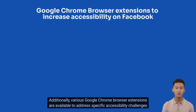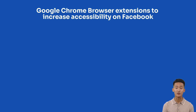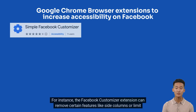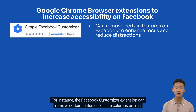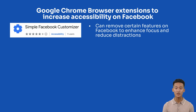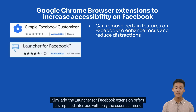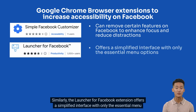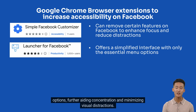Additionally, various Google Chrome browser extensions are available to address specific accessibility challenges on Facebook. For instance, the Facebook Customizer extension can remove certain features, like side columns, or limit the amount of content displayed on the news feed, thus enhancing focus and reducing distractions. Similarly, the Launcher for Facebook extension offers a simplified interface with only the essential menu options, further aiding concentration and minimizing visual distractions.